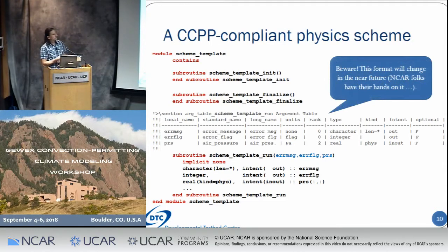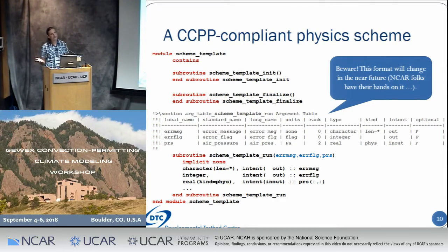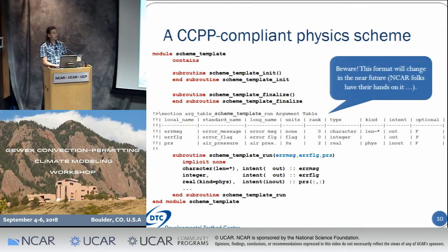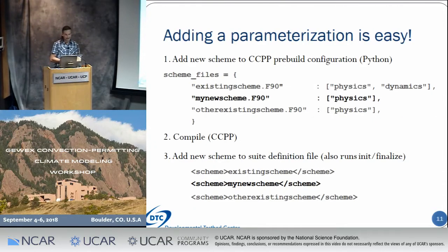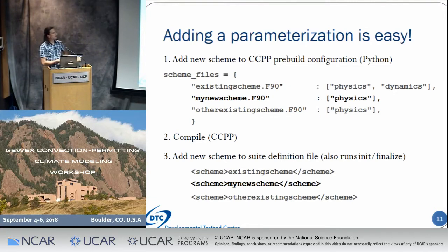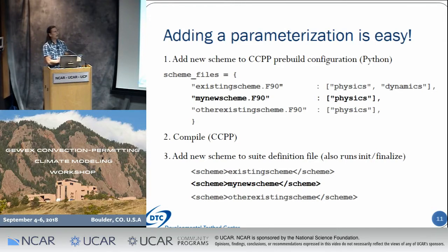Just a warning: the NCAR folks have their hands on this right now as they start working with us at NOAA, so this metadata table layout might change a bit in the future, but the idea stays the same. There is a standardized metadata table that describes what goes into and out of the scheme. The benefit easily outweighs the overhead. You get documentation for free as I said, and it's really easy to add a parameterization to a model already connected to the CCPP. Basically you have to do three things: add the source file to the CCPP pre-build configuration, compile only the CCPP physics library without recompiling the model, and add the new scheme at the appropriate location in your suite definition file.